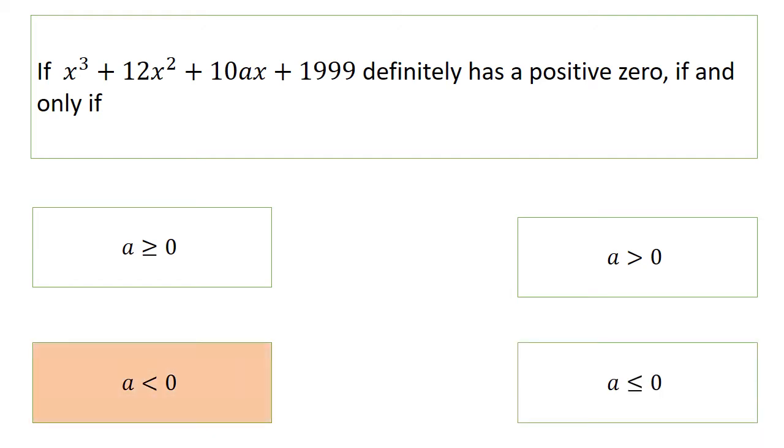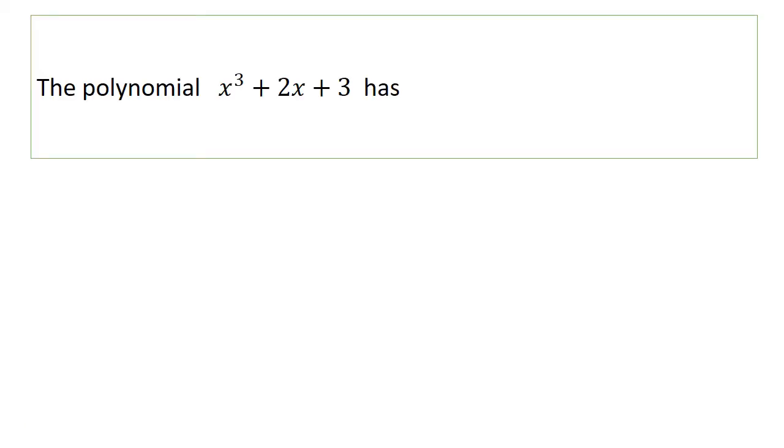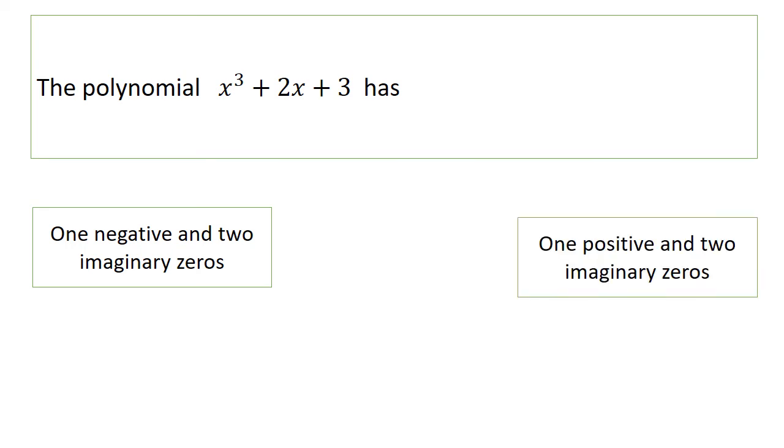The answer is a < 0. The polynomial x³ + 3x + 3 has: one negative and two imaginary zeros, one positive and two imaginary zeros, three real zeros, or no zeros. The answer is one negative and two imaginary zeros.